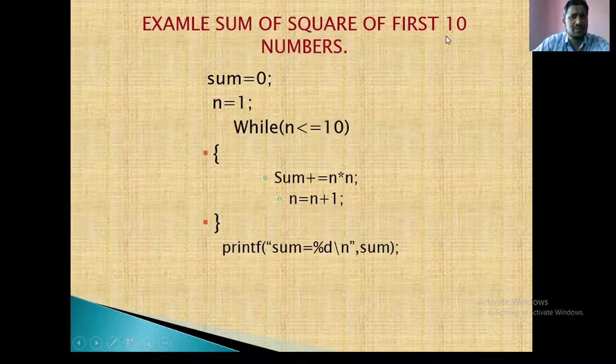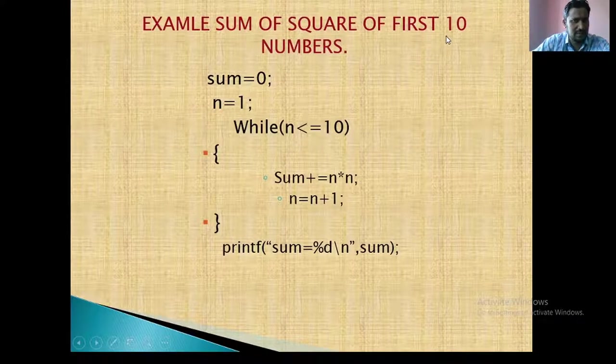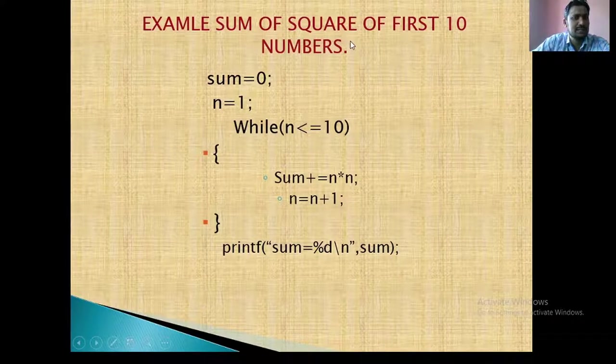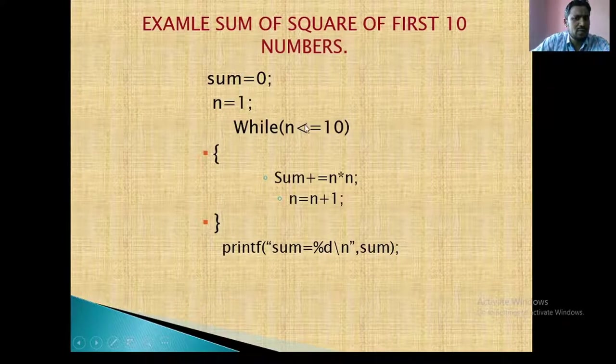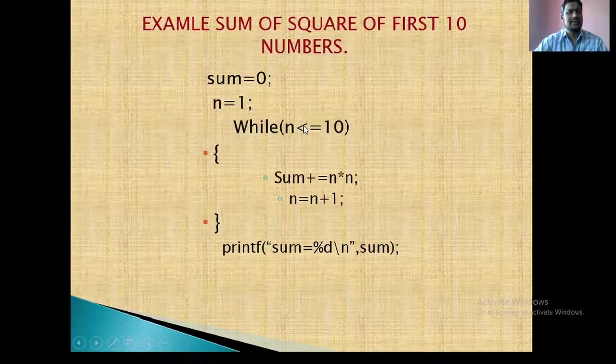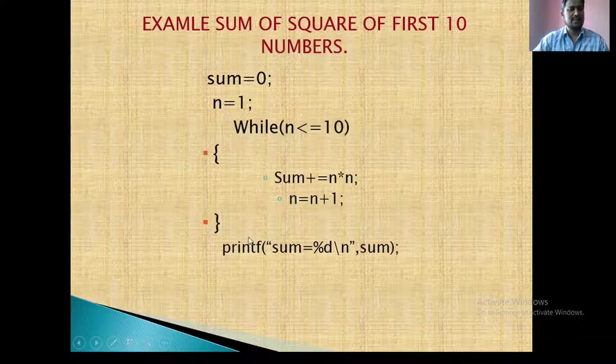So this is the example of while statement. Sum of square of first 10 numbers. So sum equal to 0, n equal to 1. While n is less than or equal to 10. So sum plus equal to n star n. n equal to n plus 1.